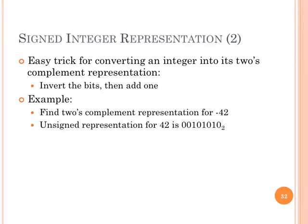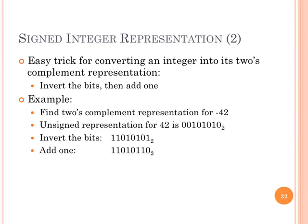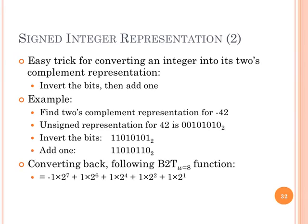To convert an integer value to its two's complement representation, there's an easy trick: invert the bits and then add 1. That's all you have to do to get from an unsigned value to its two's complement representation. For example, to get minus 42: take the unsigned representation of 42 which is 00101010, invert all the bits — that's called one's complement inversion — giving 11010101, then add 1 to get 11010110. If you then apply the B2T function — minus 1 times 2^7 plus 1 times 2^6 and so forth — you multiply it all out and end up with minus 42.